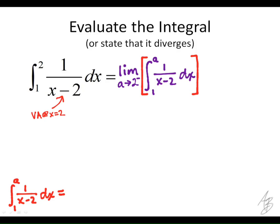So how are we going to take the antiderivative of 1 over x minus 2? We're going to use the natural log, right? So this is going to be the natural log of the absolute value of x minus 2 evaluated from 1 to a.